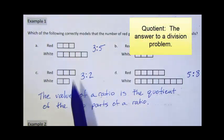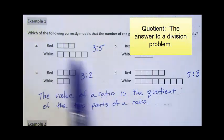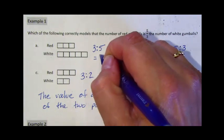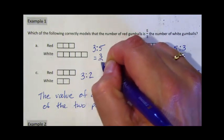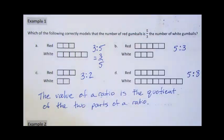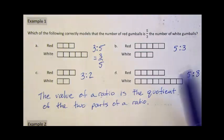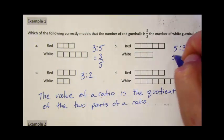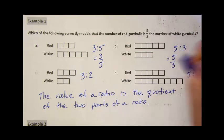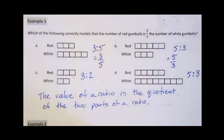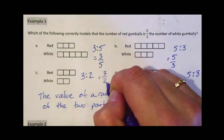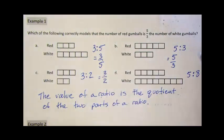In order to find the value of a ratio, we're going to find the quotient of the two parts of the ratio. For part A, we take three divided by five, so the value is three-fifths. In part B, the value is five-thirds — five divided by three. In part C, the value is three-halves. In part D, the value is five-eighths.